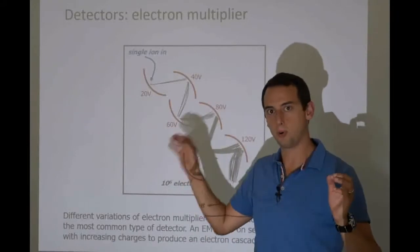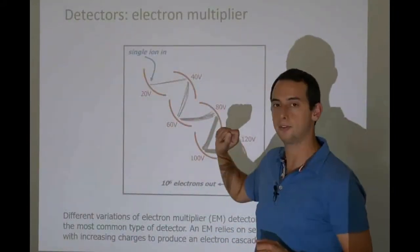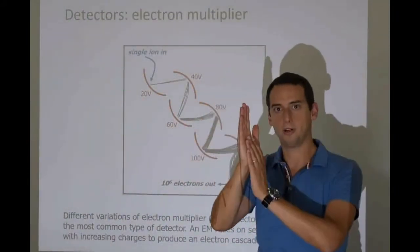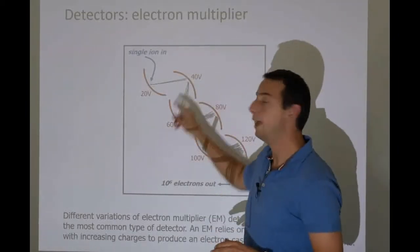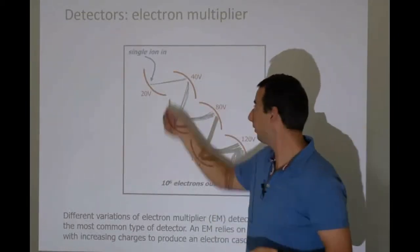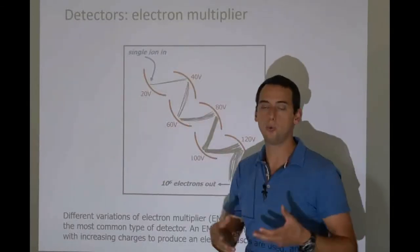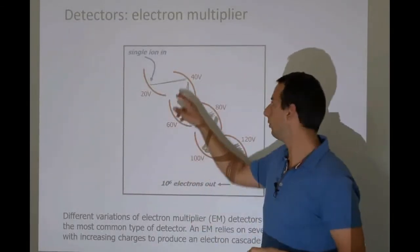and they start accelerating towards that electrode. They, too, are going to hit that electrode. And every time one of these two, three, four electrons hits the plate, they're going to knock free a further few electrons, which are then attracted to the next plate,